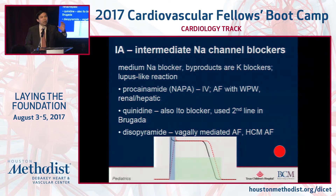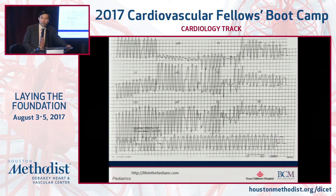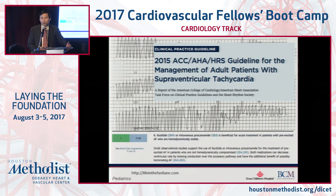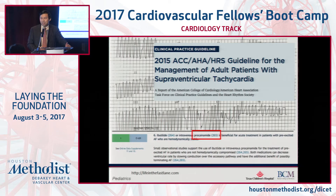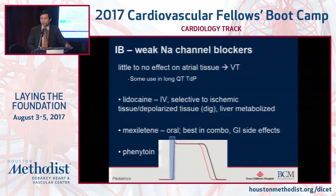I'm going to put a color code on there. Red means you're probably not going to use it at all — it's probably just going to show up on your boards unless you have some old-school docs. This is AFib with WPW: irregularly irregular, wide complex. The 2015 guidelines say you can use ibutilide or procainamide. That's probably the only time you'll see procainamide used much in your fellowship.